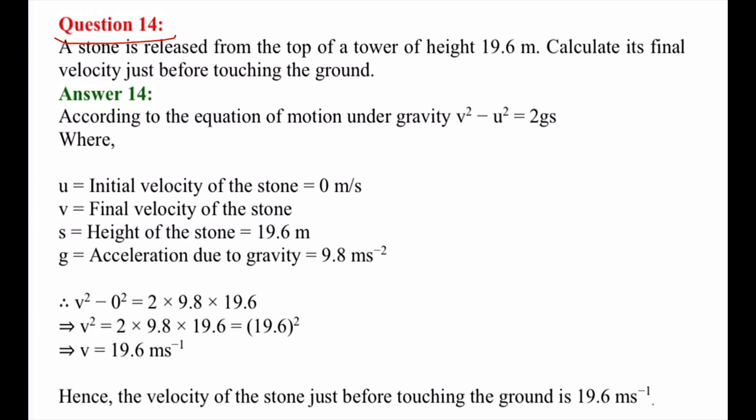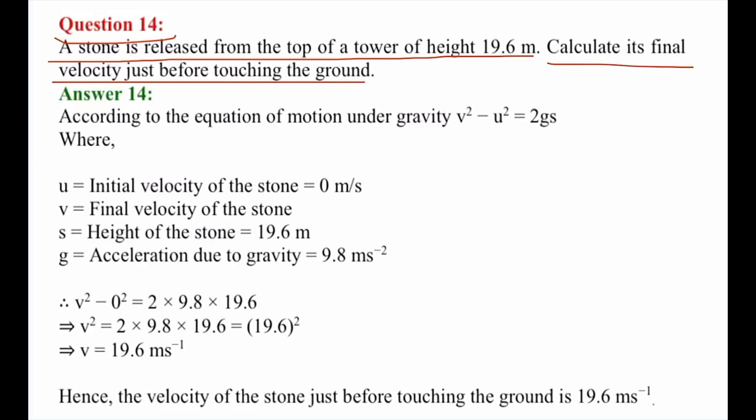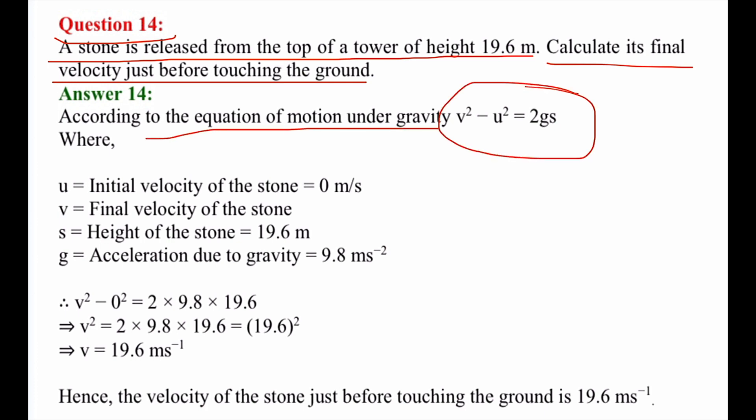Question number 14: A stone is released from the top of a tower of height 19.6 meters. Calculate its final velocity just before touching the ground. The stone is released from rest, so we understand the setup and apply the equation: V squared minus U squared equals 2GS.